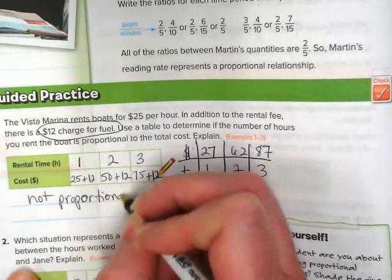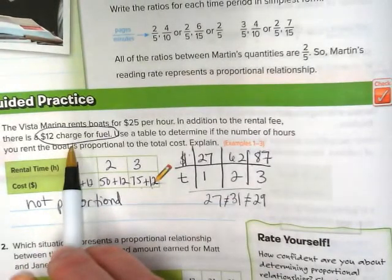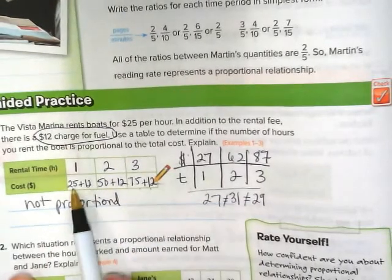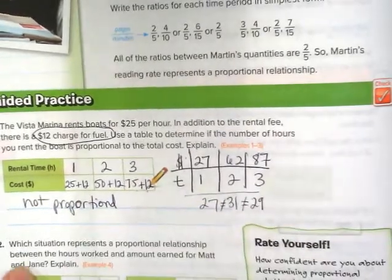And what is your reason? Well, that $12 for fuel that you have to charge no matter how many hours changes it. It's not a constant rate. The constant is the amount that you charge per hour, but then that $12 per hour changes this.